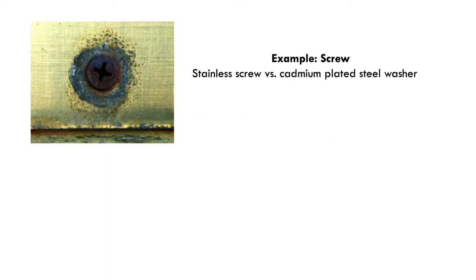Some examples of galvanic corrosion can be seen in everyday life. This is an example of galvanic corrosion — a picture of a screw made out of stainless steel material attached to a cadmium-plated steel washer. When water was applied to this substance, it caused a blue residue to form.